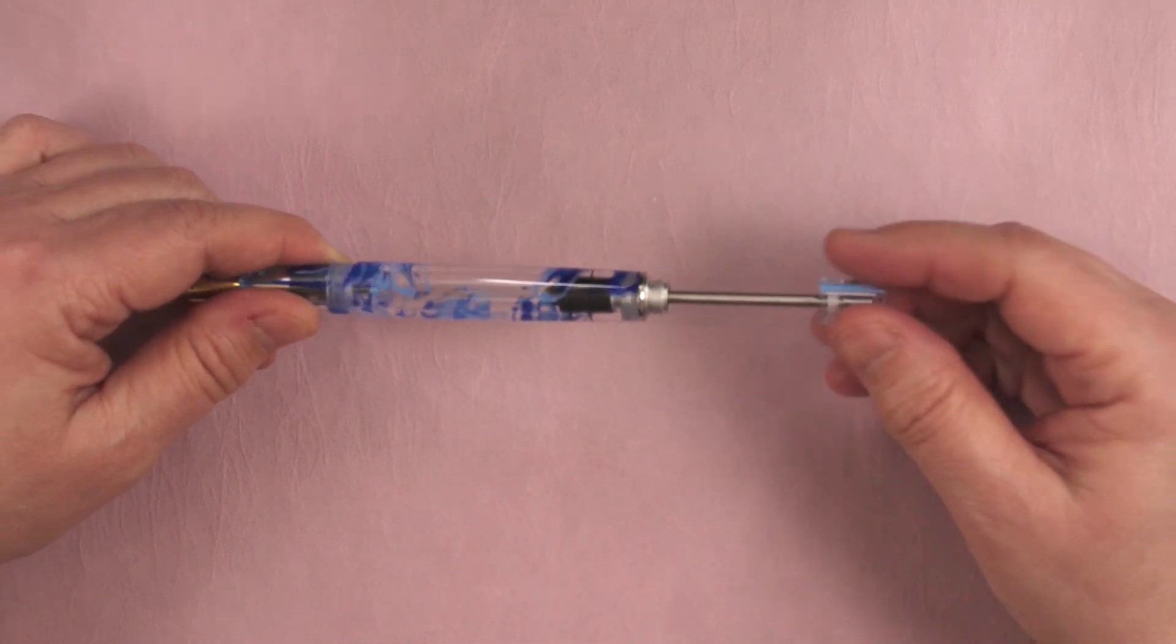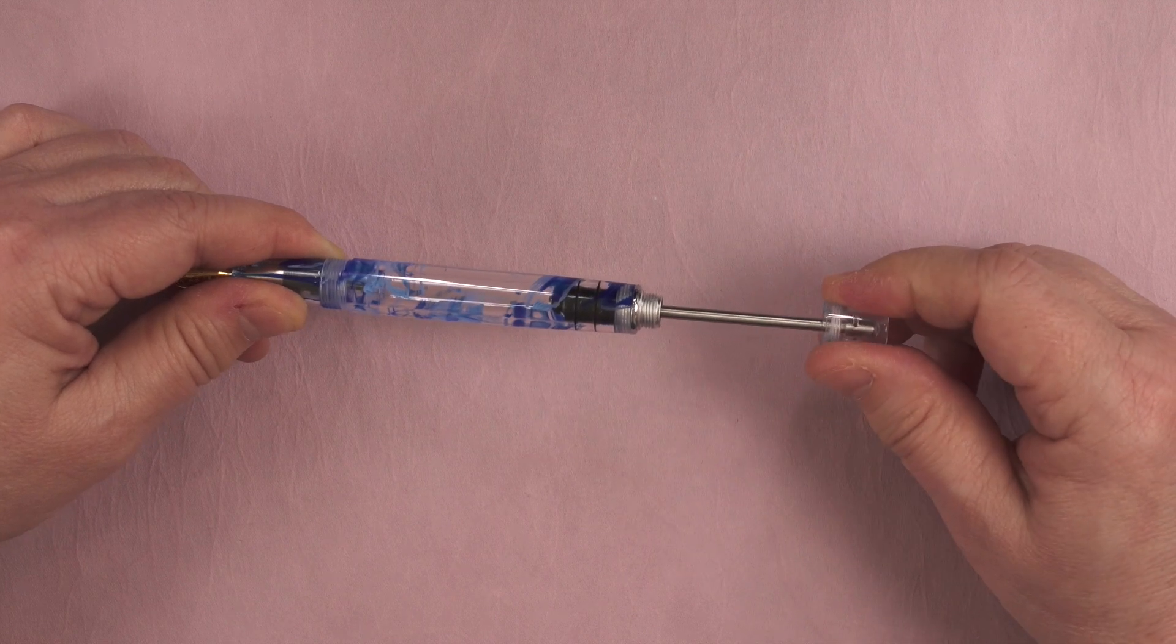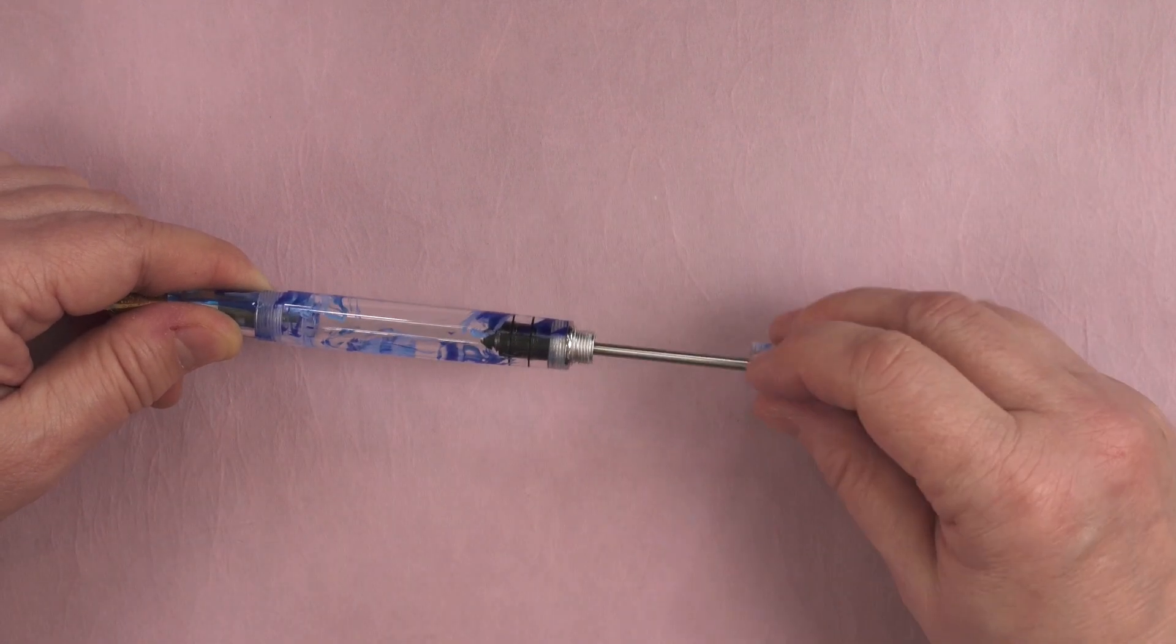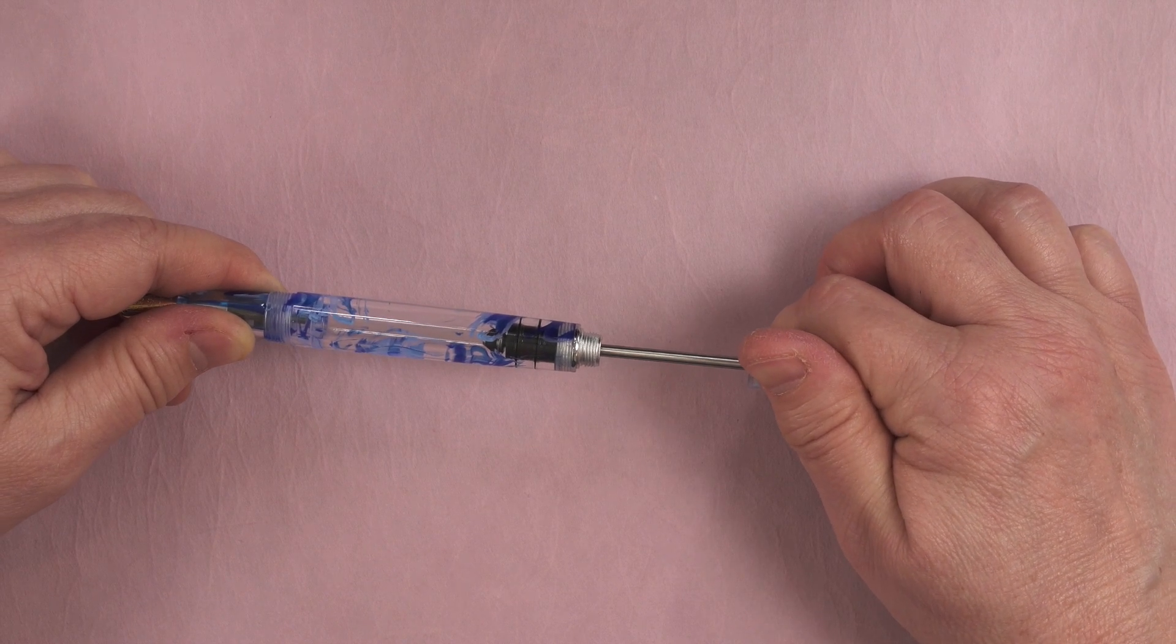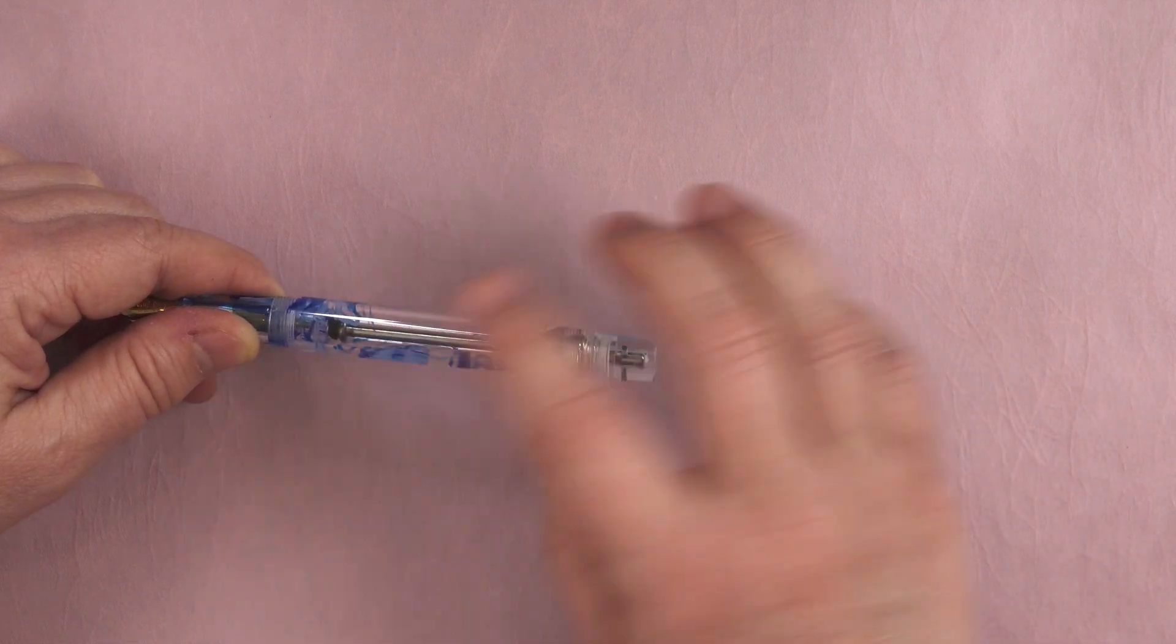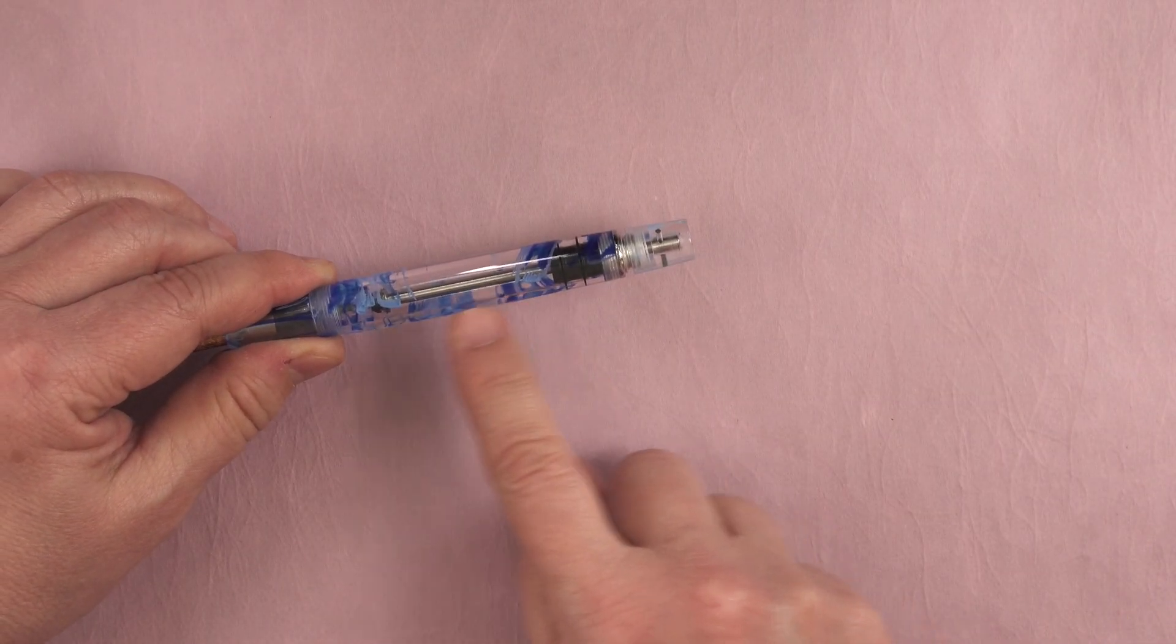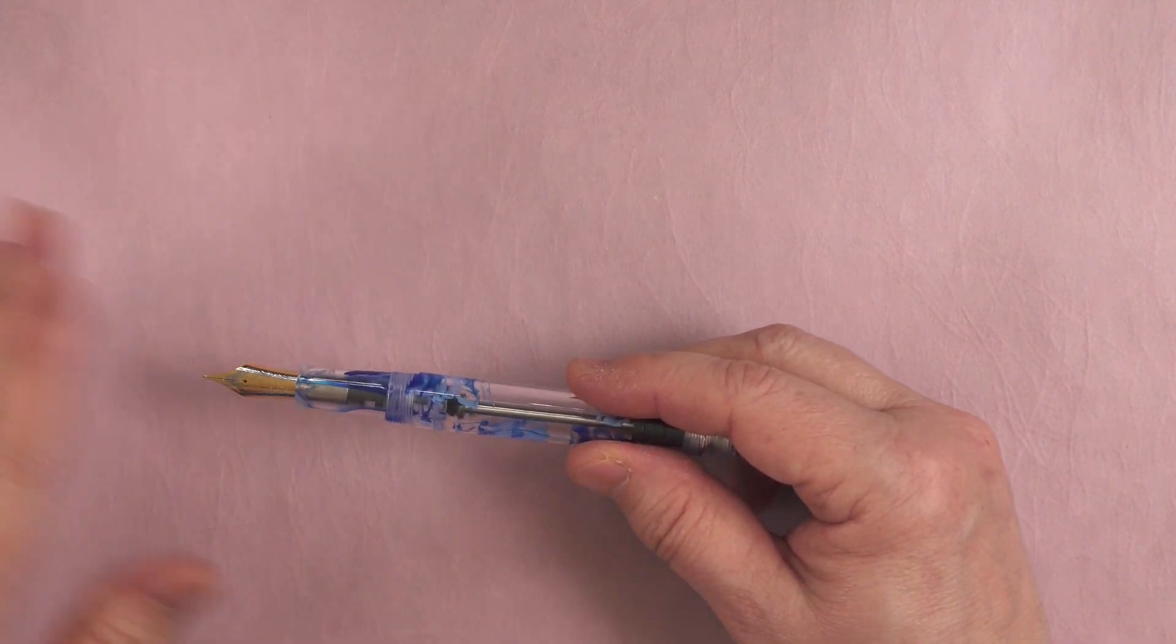Once you've filled the pen and the piston is in the top of the barrel, then you need to turn the blind cap away from you to disengage that rod from the piston so that you can push the rod back in. Here I'm checking to make sure that the little end is being unscrewed from the piston and then you push forward and push it in and then continue turning in the same direction to close the end cap. Pushing that rod forward will displace some ink and they tell you to be careful because some ink will come out of the nib.